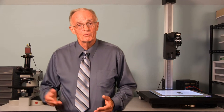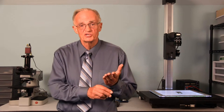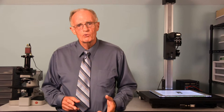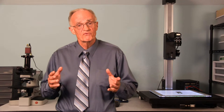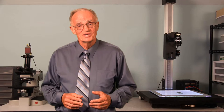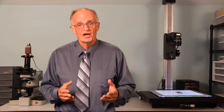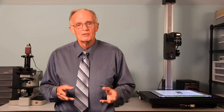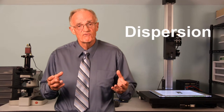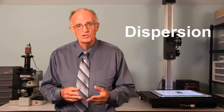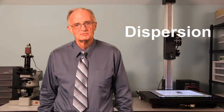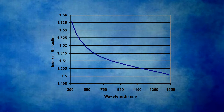We are going to turn our attention from absorption back to transmission. In the previous video, we talked about transmission and refraction, and specifically the index of refraction, as if the index of refraction were a constant. But it's not. The index of refraction changes for different wavelengths of light in all materials. The degree to which the index of refraction changes is called dispersion. This graph shows the index of refraction for one kind of glass — you note that it changes with wavelength.